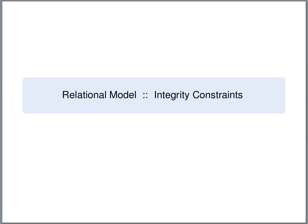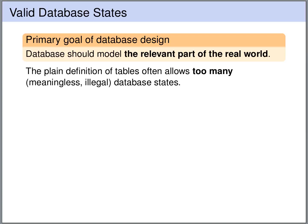Not null is one of the constraints that we can express for the data in our tables, but there are many more integrity constraints that we can express. One of the primary goals of database design is to model the relevant part of the world as closely as possible. The plain definition of tables often allows for too many illegal database states — states that are not meaningful and do not represent a real-world scenario.